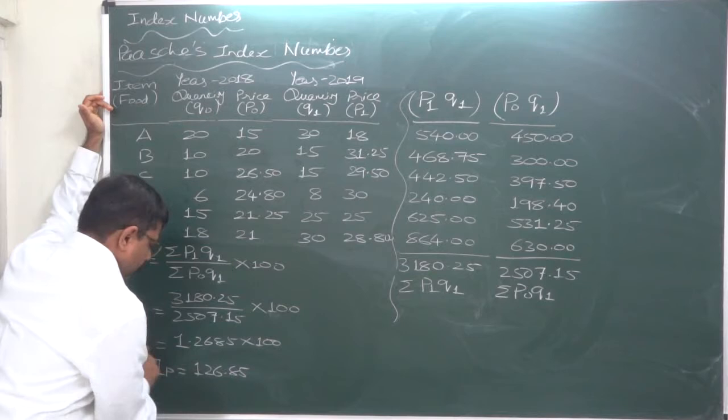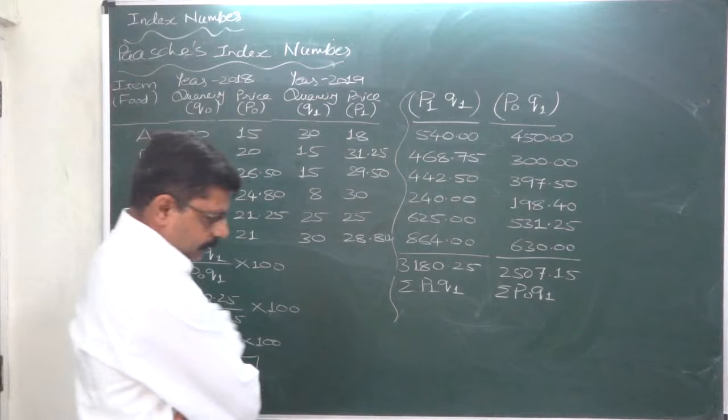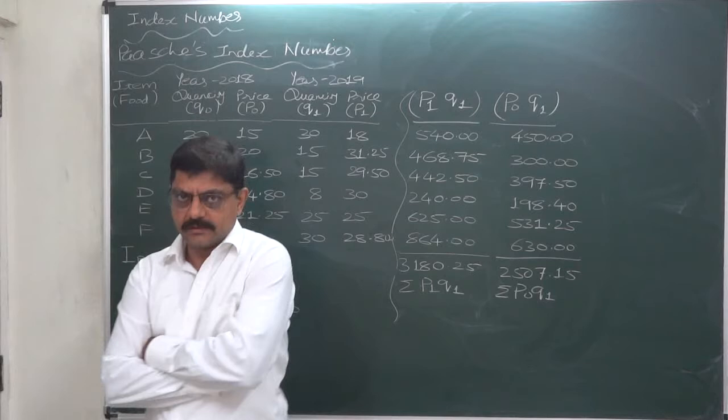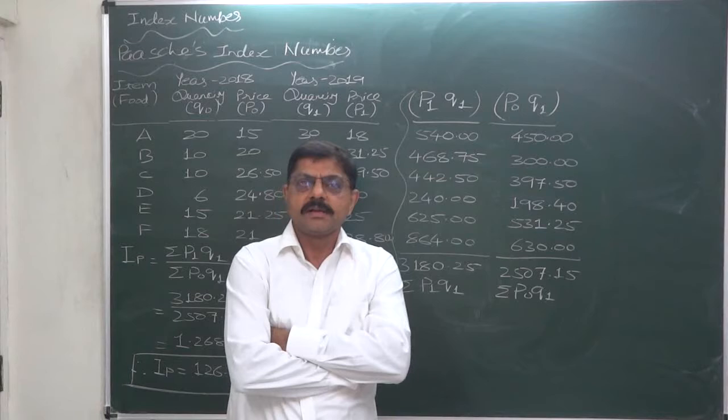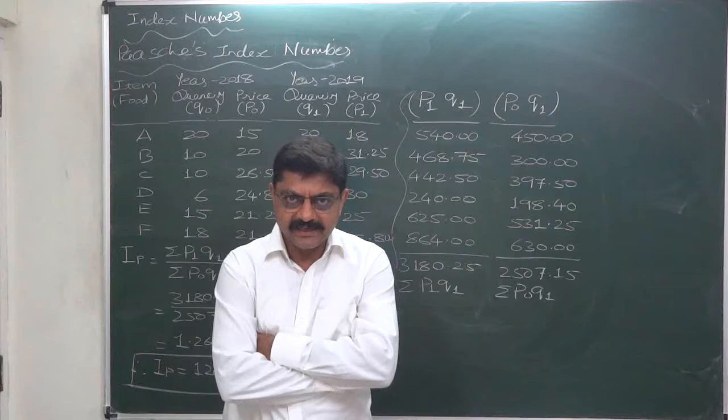This is Paasche's index number. The similarity between Laspeyres index number and Paasche's index number is we need to consider the quantity, but the difference is Laspeyres suggests considering the quantity of base year, Paasche suggests considering the quantity of current year. That is the biggest difference between these two formulas.